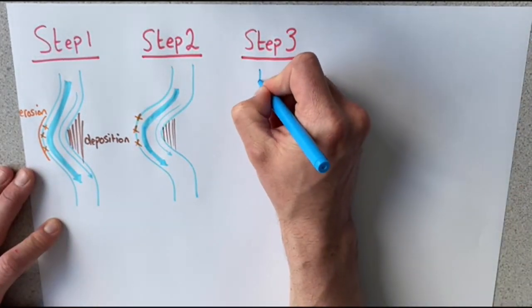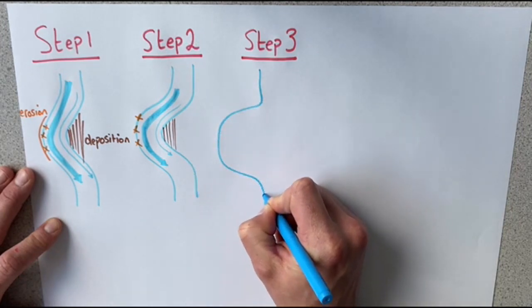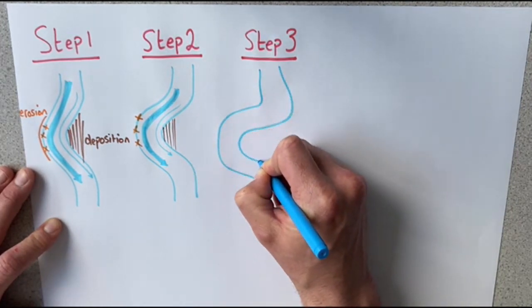Step 3. Now we are starting to see this horseshoe-like turn in the river that we call a meander.